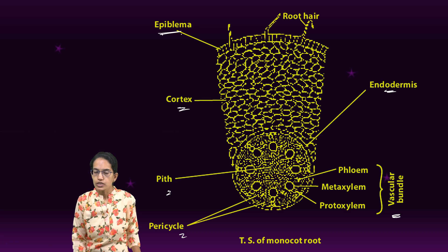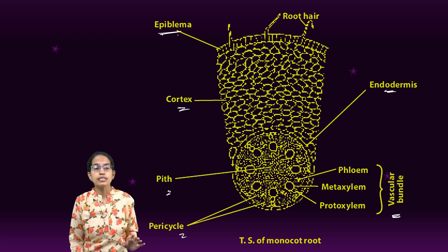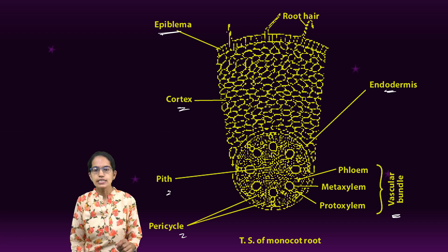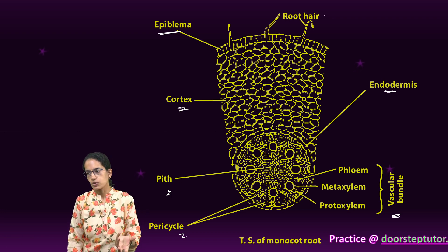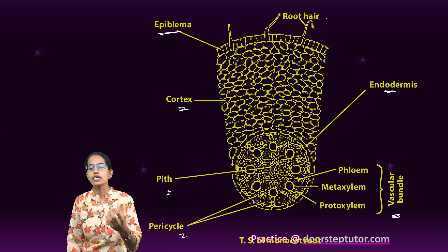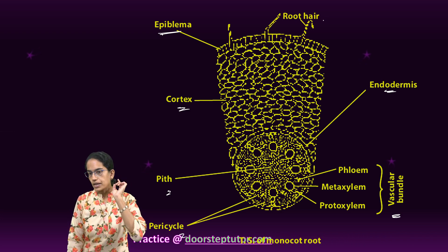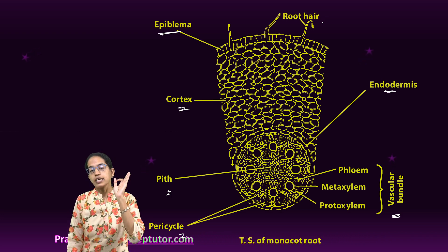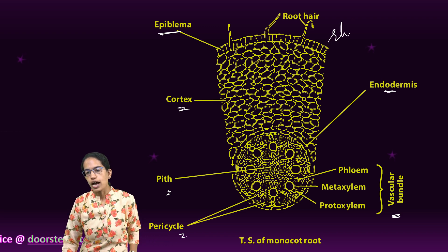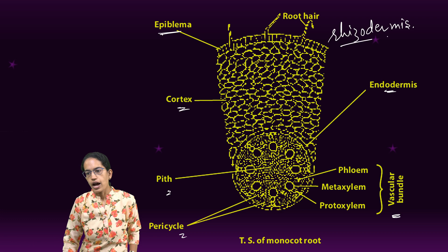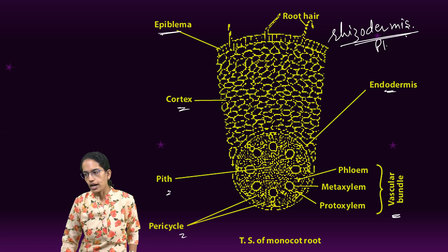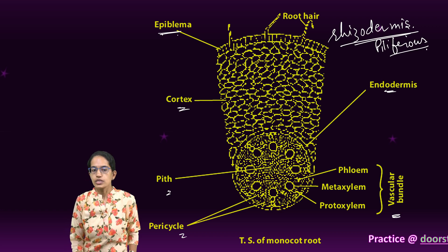Epiblema is the outermost layer. It is uncuticularized, colorless and has root hairs. The root hairs absorb the water and mineral salts, and this is the main function. This layer is also known as rhizodermis and it is a kind of piliferous layer. This is the first layer.